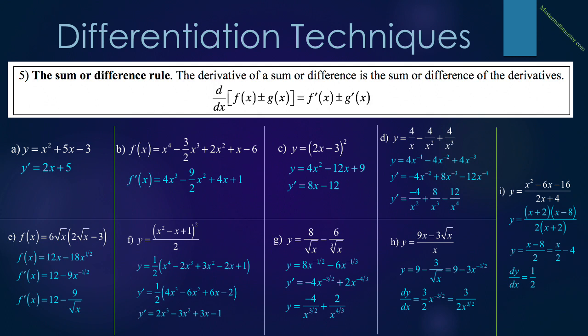In i, y equals x squared minus 6x minus 16, all over 2x plus 4. The only choice is to factor both numerator and denominator: x plus 2 times x minus 8 over 2 times x plus 2. The x plus 2's cancel, leaving y equals x minus 8 over 2, which splits into x over 2 minus 4. So the derivative of this difficult-looking expression is simply 1/2.